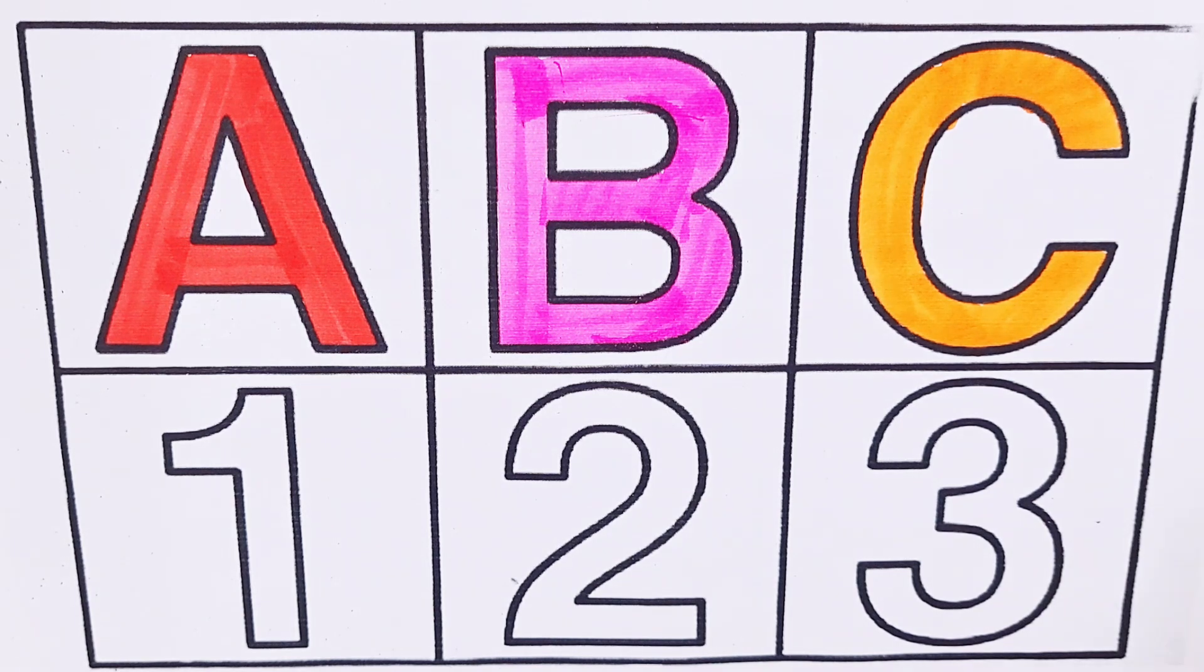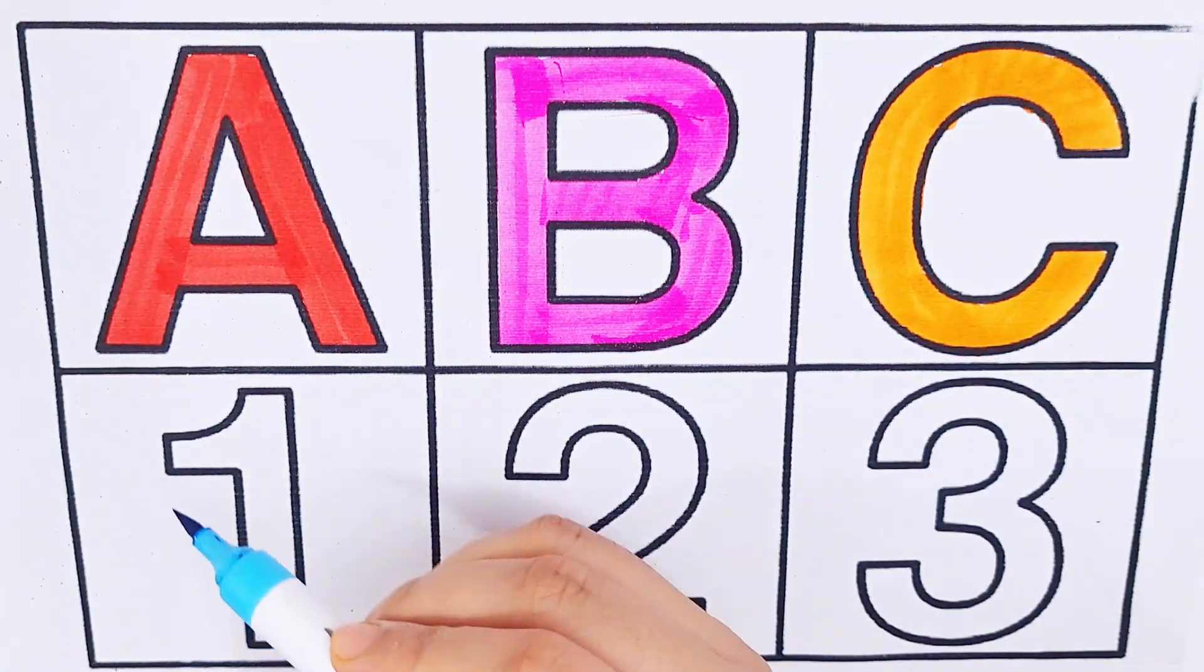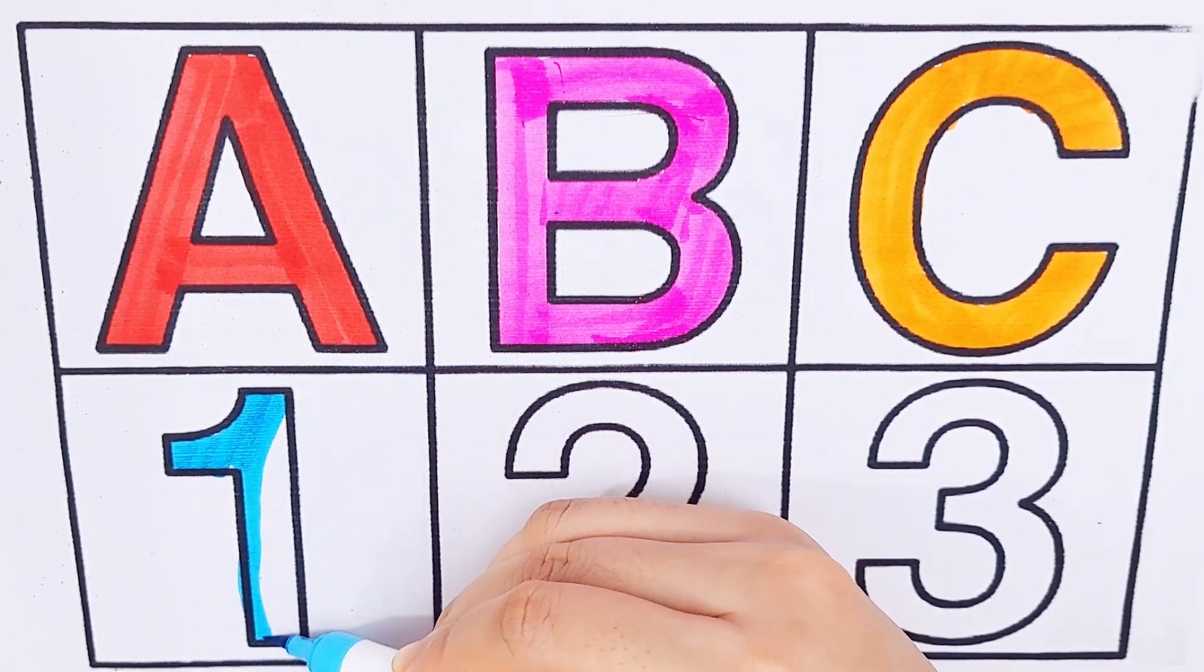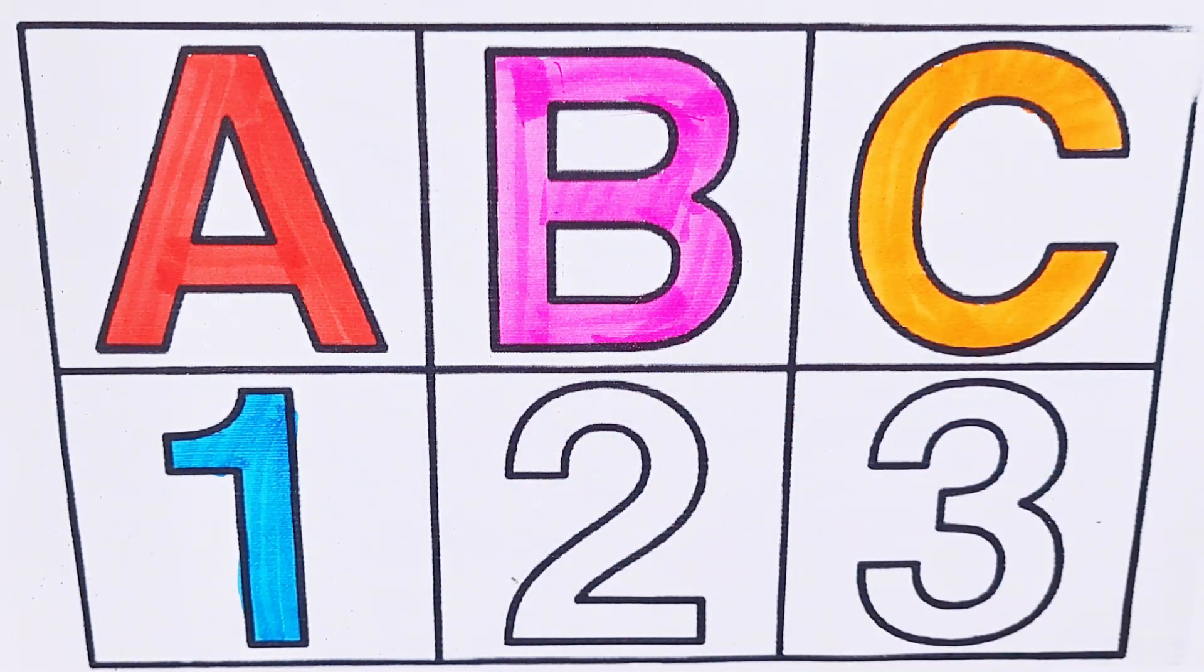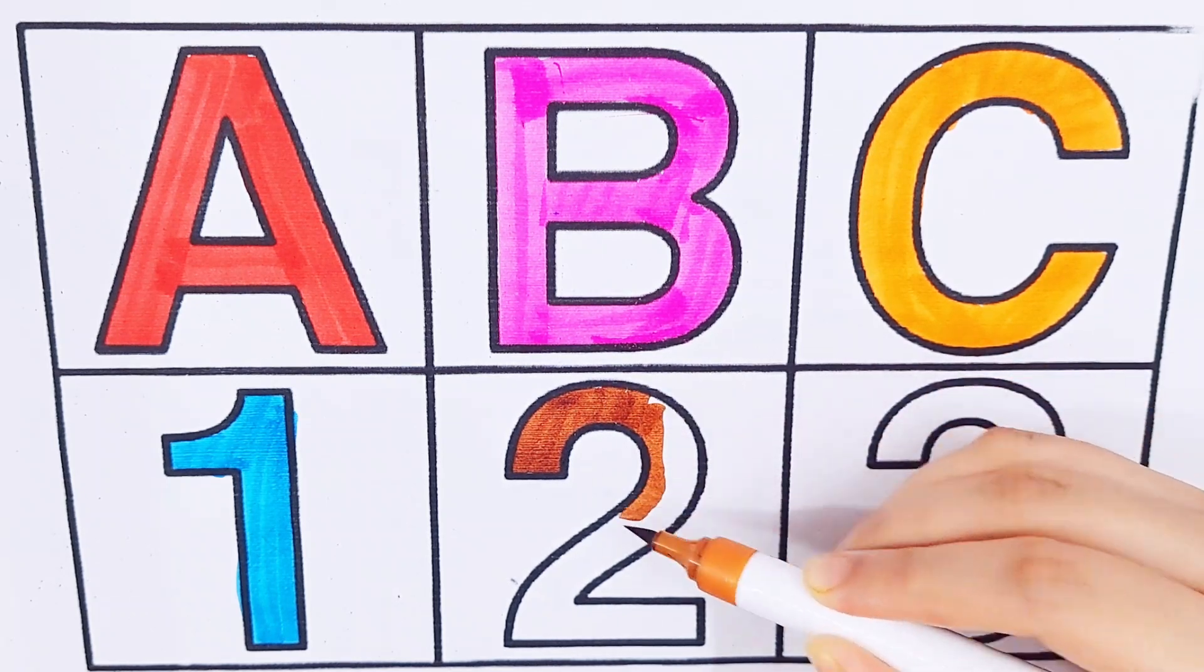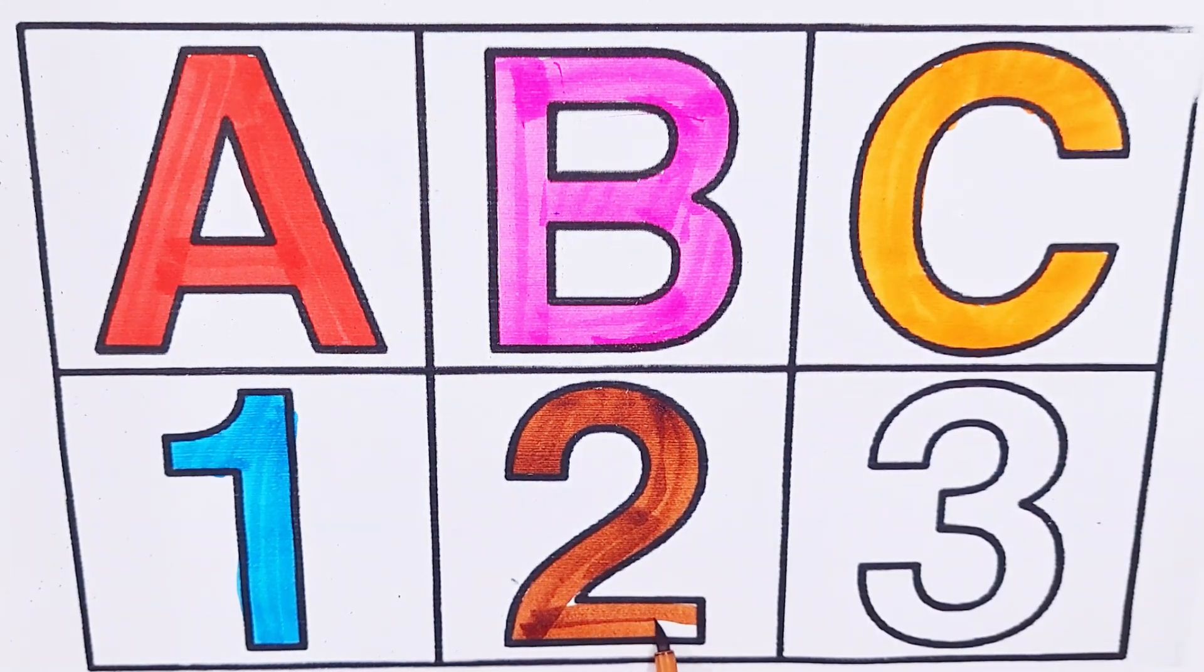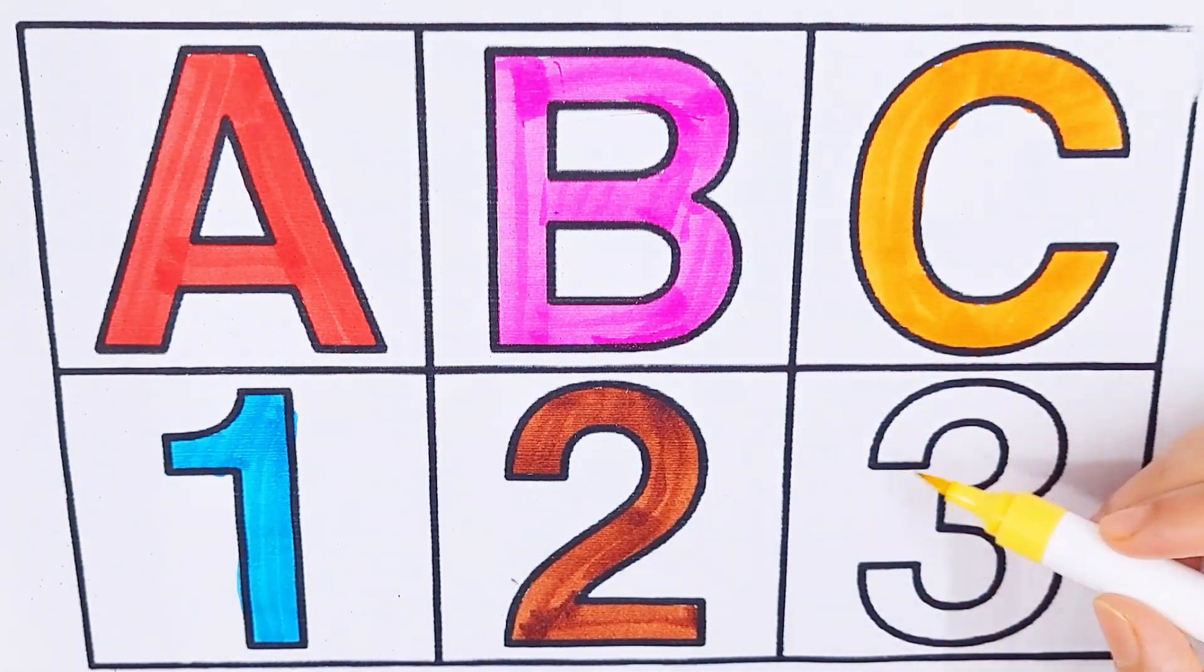Let's learn some numbers. Number one, number two, number three. Sky blue color number one. Brown color number two. Yellow color number three.